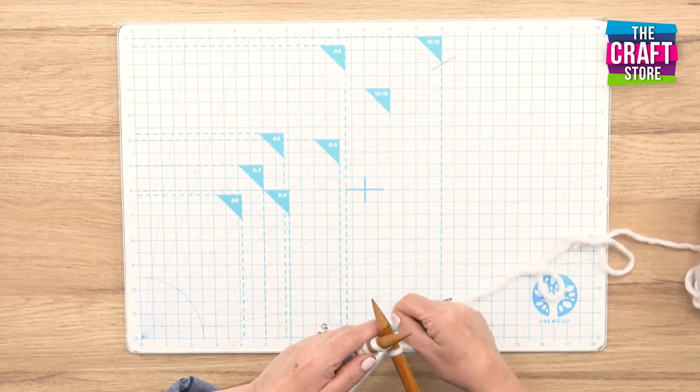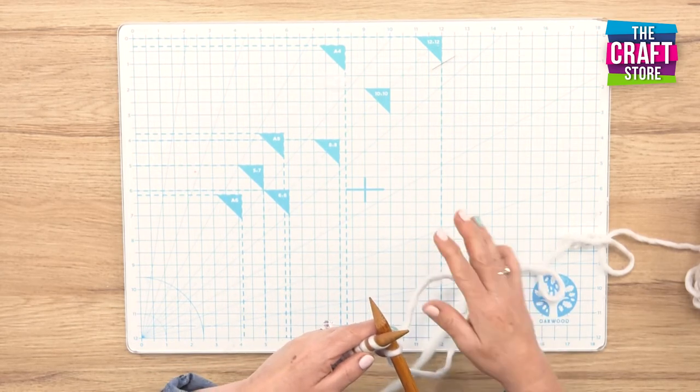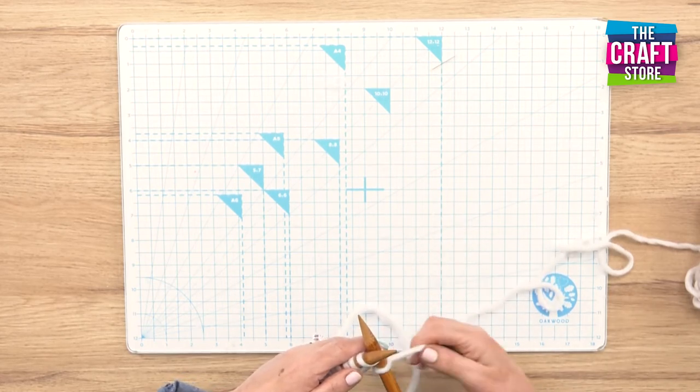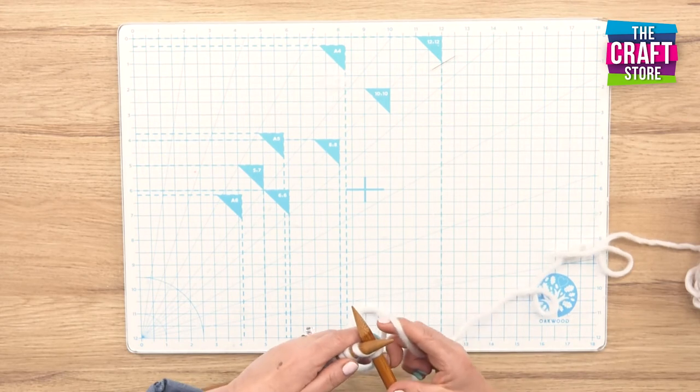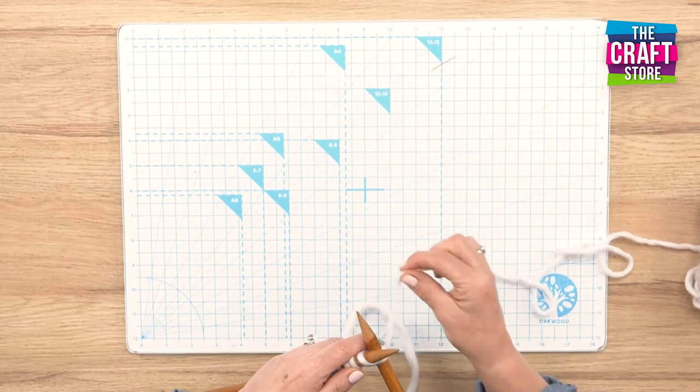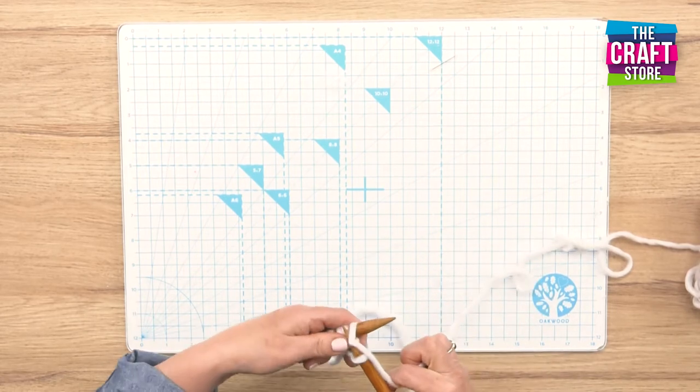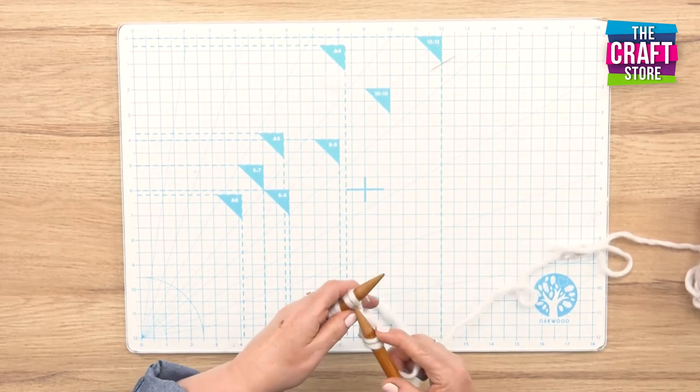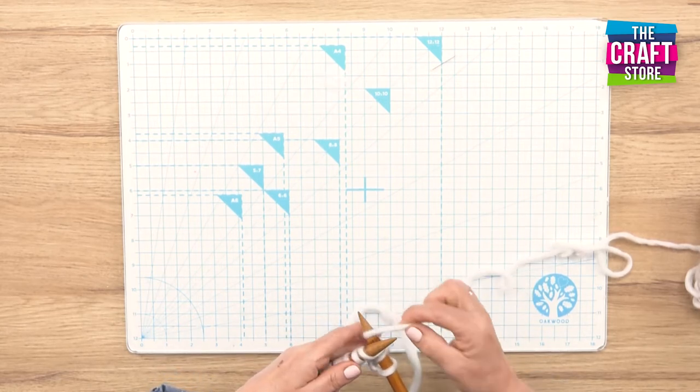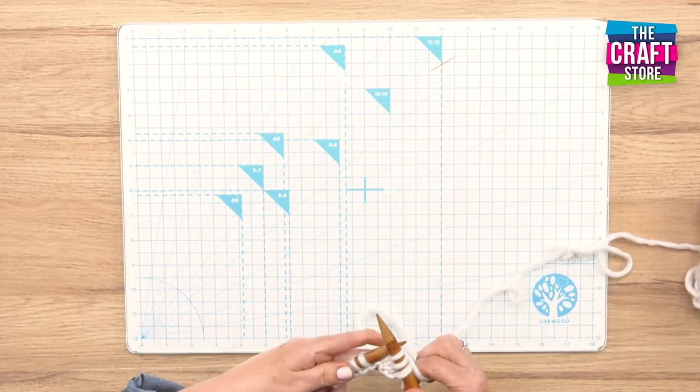Don't worry about keeping your stitches a good tension, not yet, because you're just learning. So it's like everything you do, swimming, riding a bike, things like that. The more you do it the better you get at it, so it's just practice. So we go round and off, so into your stitch and round and off.